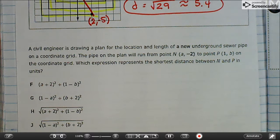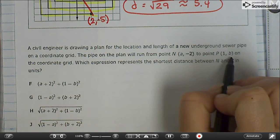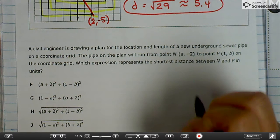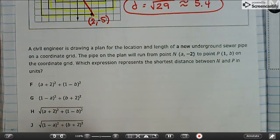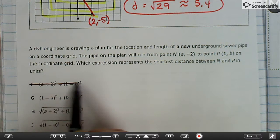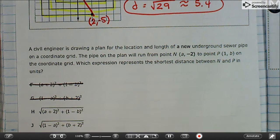And lastly, the civil engineer is drawing a plan for the location and length of a new underground sewer pipe on a coordinate grid. The pipe on the plan will run from the point A-2 to the point 1B on the coordinate grid. Which expression is the shortest distance? Well, we can cross off F and G because those are actually naked and the distance formula does not like to be naked.